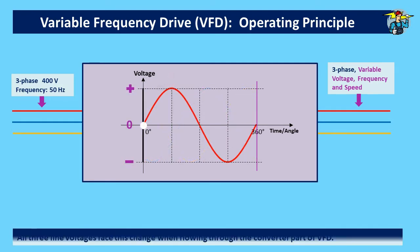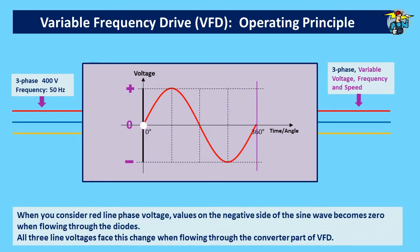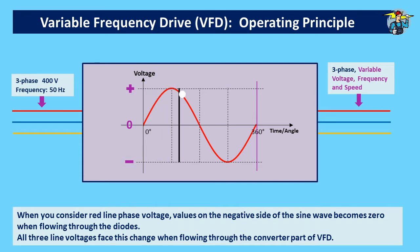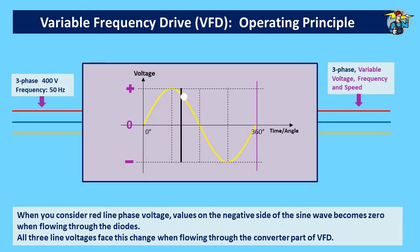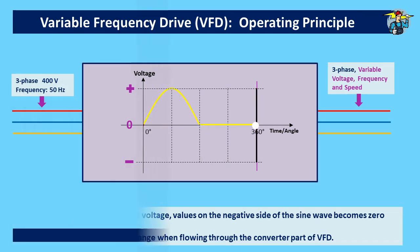When you consider the red line phase voltage, values on the negative side of the sine wave become zero when flowing through the diodes. All three line voltages face this change when flowing through the converter part of the VFD.